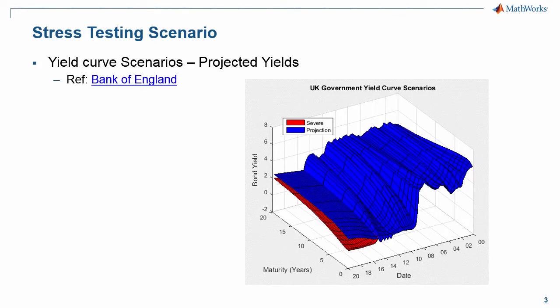We can see two distinct projections: in blue, a standard projection, and in red, what the Bank of England considers to be a severe future projection to the yield curve with negative yields.